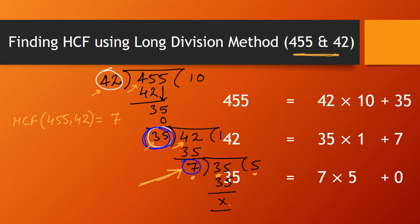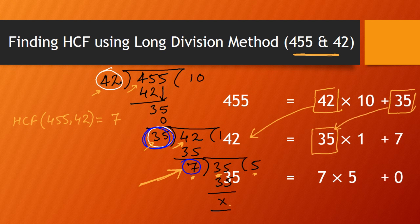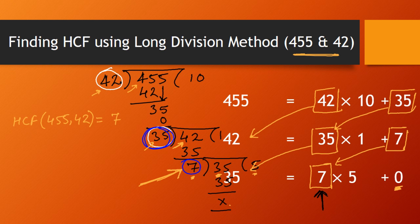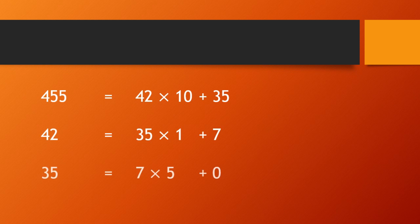Now let's see what happens if we ignore the long division method and solve it purely using Euclid's Division Lemma. What I have to do is the previous divisor has to be written as A and the last remainder as B. In the next step, the last B or divisor becomes A or dividend, and the last remainder R becomes B or divisor. This continues till the remainder equals 0, and the last B — the last divisor — is the HCF.